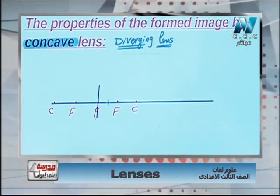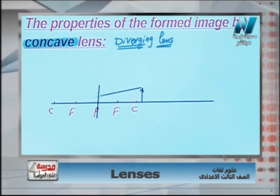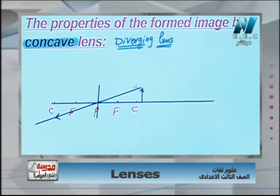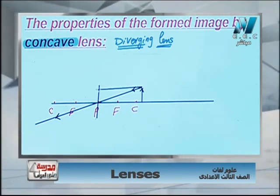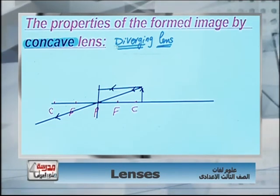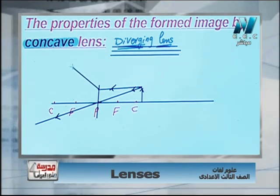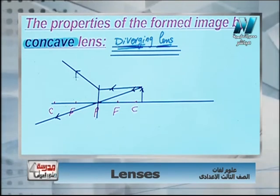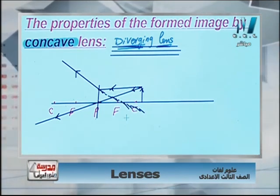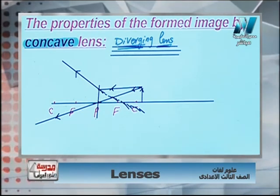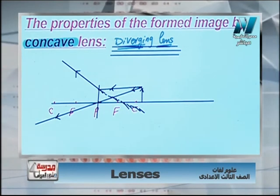Using rule one, the light ray through the optical center continues without refraction. For the ray parallel to the principal axis: since the concave lens is diverging, the light refracts away from the principal axis. We use the ruler to draw the extension of this refracted ray back toward the focus. The intersection of the direct ray and the extension of the other refracted ray gives the image position.